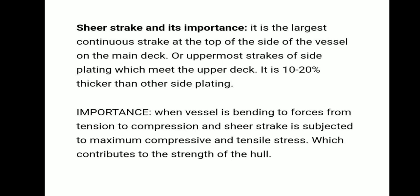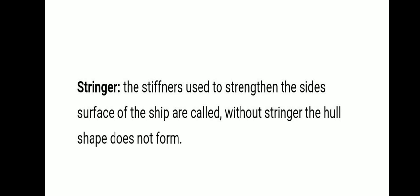When a vessel is bending due to forces, the shear strake is subjected to maximum compressive and tensile stress, contributing to hull strength and providing extra support to the hull. Stringers are used to strengthen the side surface of the ship. Without stringers, the hull shape would not hold. Stringers are strengthening members used to reinforce the ship's side surface.